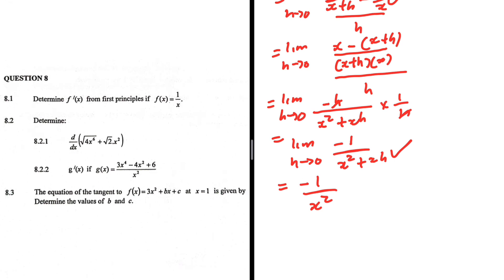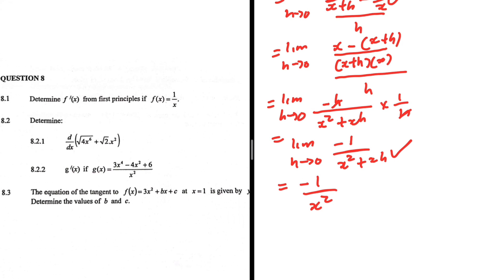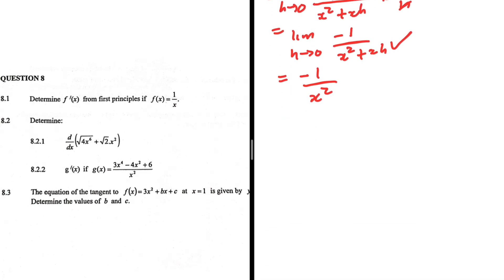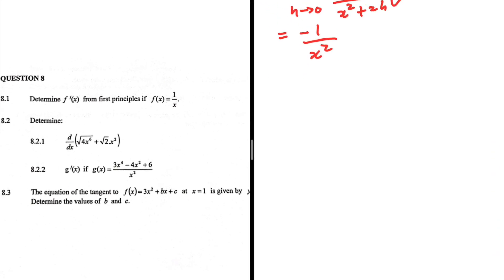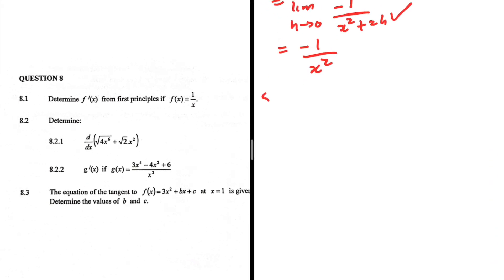That is 8.1, worth 5 marks. It is a unique one. Most of the time we just have something like 2x squared plus 4, something very easy. But this one is quite unique, but still doable. Let's move to 8.2.